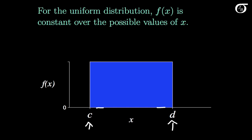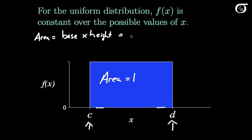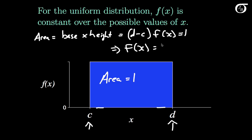This is a continuous probability distribution, so we know that the area under the entire curve has to equal 1. For the uniform distribution, that area is simply a rectangle — base times height. The base is d minus c, and the height is f. Since that must equal 1, f equals 1 over d minus c between c and d.